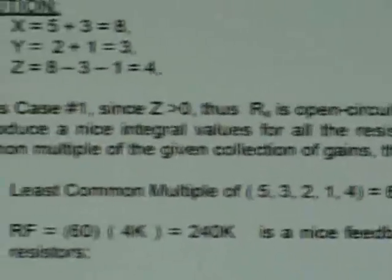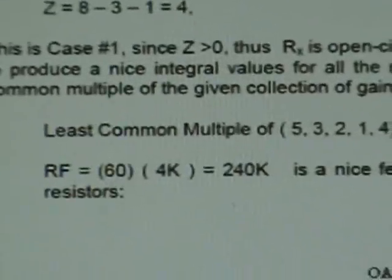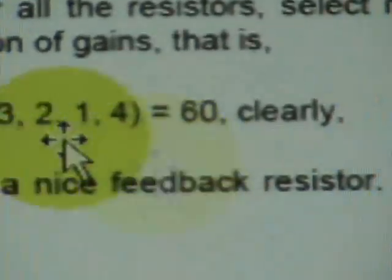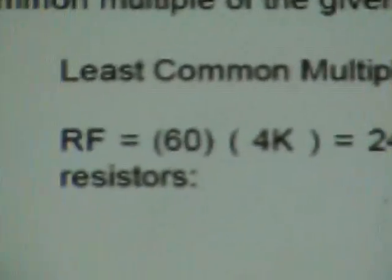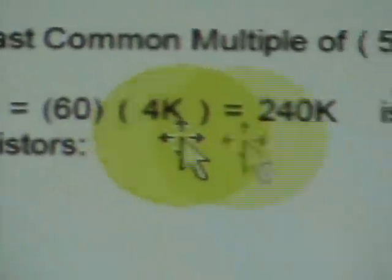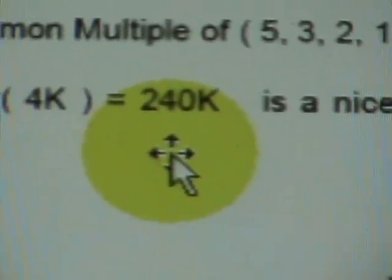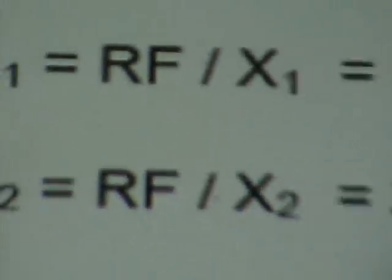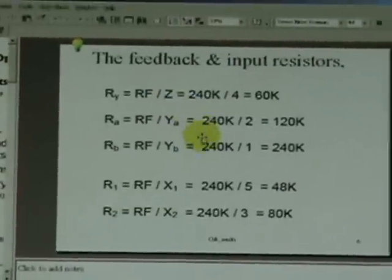The best way is to find a suitable RF that will lead to standard values for each of the remaining. The easiest way to do that is to take the least common multiple of the gains 5, 3, 2, 1 and the value of Z. It turned out to be 60, the smallest common multiple. So multiply that by 4K that produces a readily available standard resistance resistor value of 240K ohm. Based on that, the rest of the resistors can easily be calculated using the formula given in the table of summary.